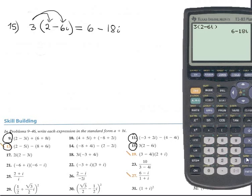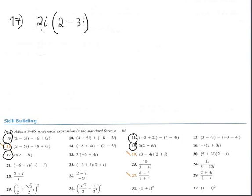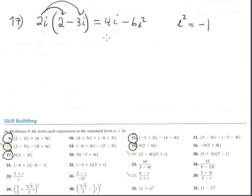Multiplication again, but this time we multiply a purely imaginary number times a complex number: (2i) times (2 - 3i). Multiply: 2i times 2 is 4i, and 2i times minus 3i is minus 6i squared. Since i squared equals negative 1, the term minus 6i squared becomes positive 6. So we have 6 plus 4i — organized with the real part first.